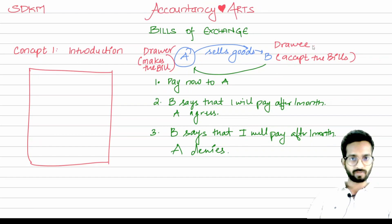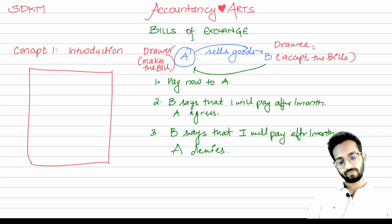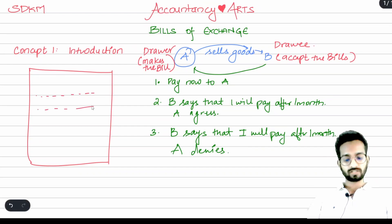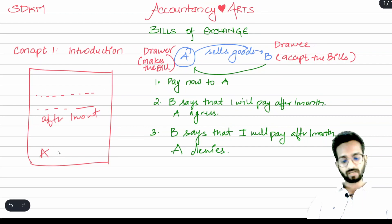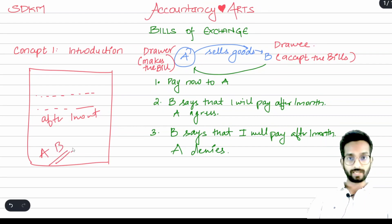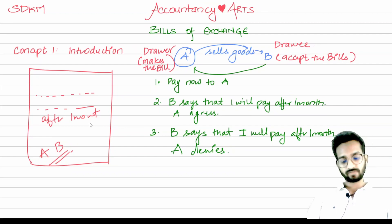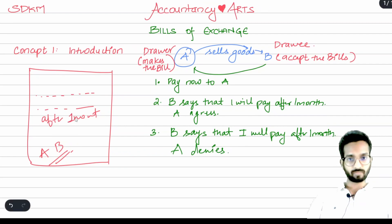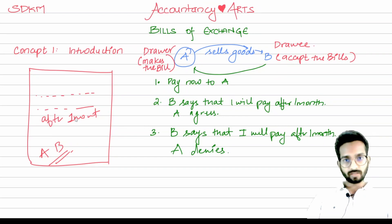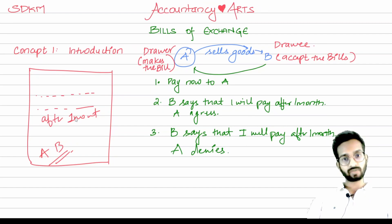The drawee can also be called the acceptor. A, as the drawer, will write all the details: the goods sold, the date, and that B is supposed to make payment after one month. Both A and B will sign, making the document valid. This document is important because if A has it and needs money after three or four days, he can go to the bank, give them this document, and take money from the bank itself.